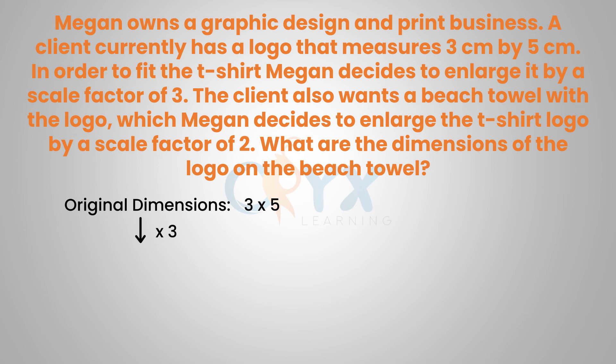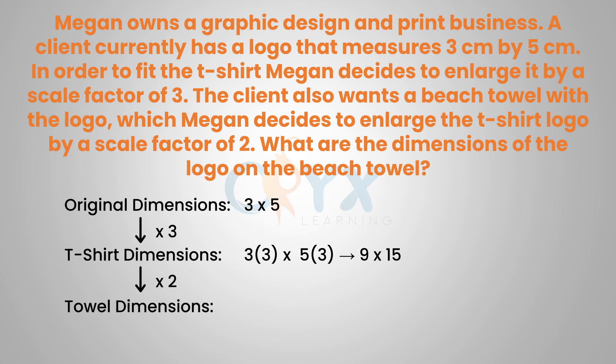So the original dimensions are 3 by 5. Using the scale factor of 3, our t-shirt dimensions would be 3 times 3 and 5 times 3, which would give us dimensions of 9 by 15. Then using a scale factor of 2 to find the towel dimensions, we would multiply 9 by 2 and 15 by 2 to get the dimensions of the logo for the towel, which is 18 by 30. So 18 cm by 30 cm would be the size of the logo needed to put on the beach towel.